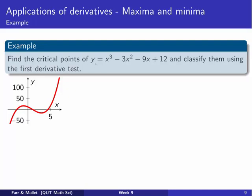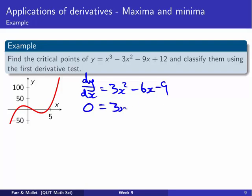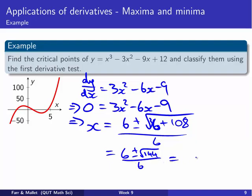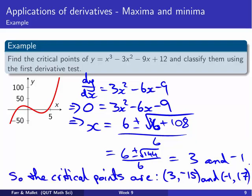Let's try it out. The function is y = x³ — find the critical points and classify them with the first derivative test. The derivative dy/dx = 3x² - 6x - 9. Set that to zero: 0 = 3x² - 6x - 9. Using the quadratic formula, x = (6 ± √(36 + 108)) / 6 = (6 ± √144) / 6, giving x = 3 and x = -1. Substituting into the function gives critical points at (3, -5) and (-1, 17).